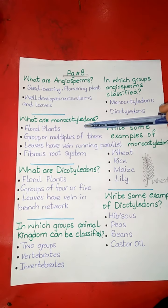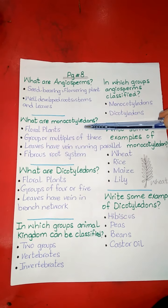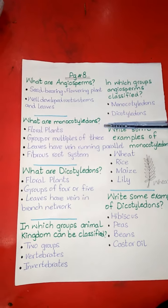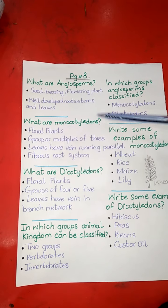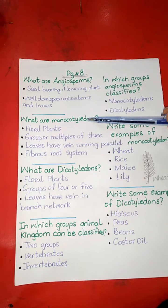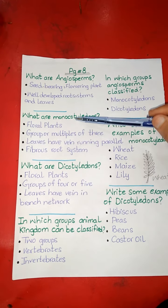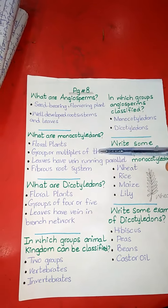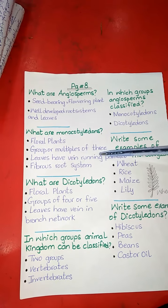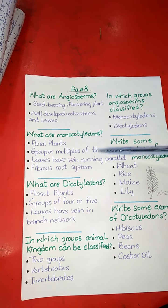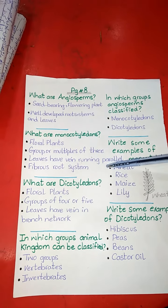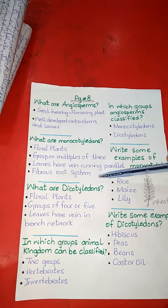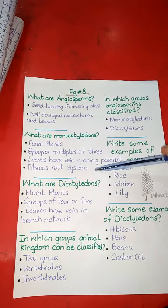Now come to the next question. What are monocotyledons? Monocotyledons kya hain? Monocotyledons are floral plants. They are arranged in groups or multiples of three. Their leaves have veins running parallel, and they have a fibrous root system.